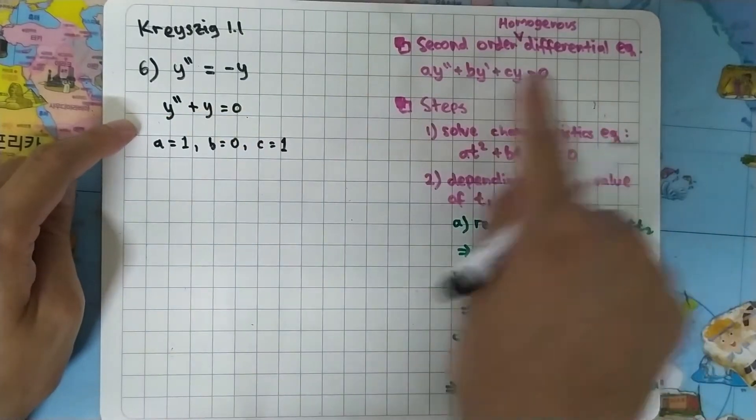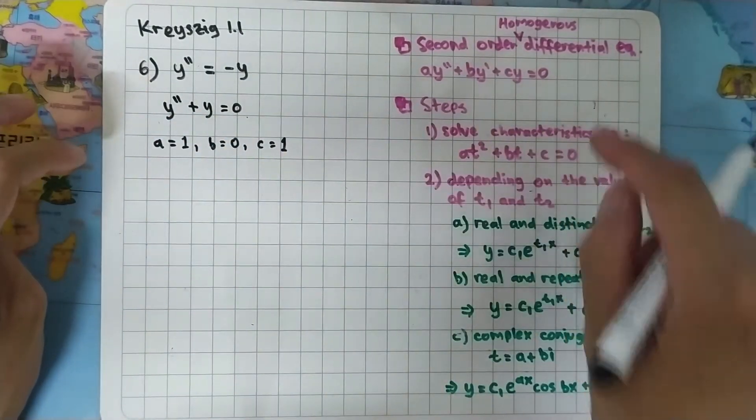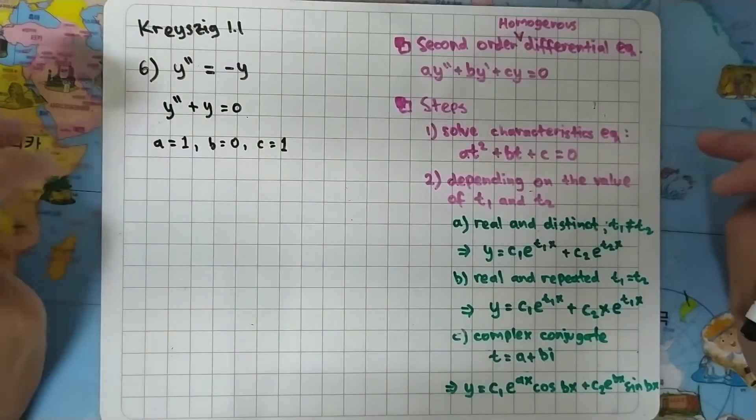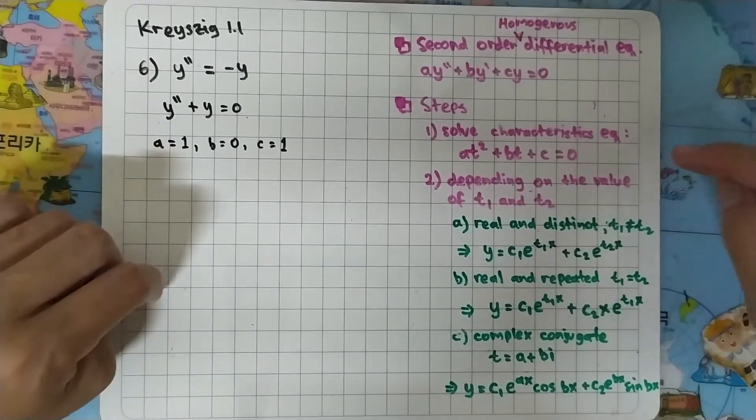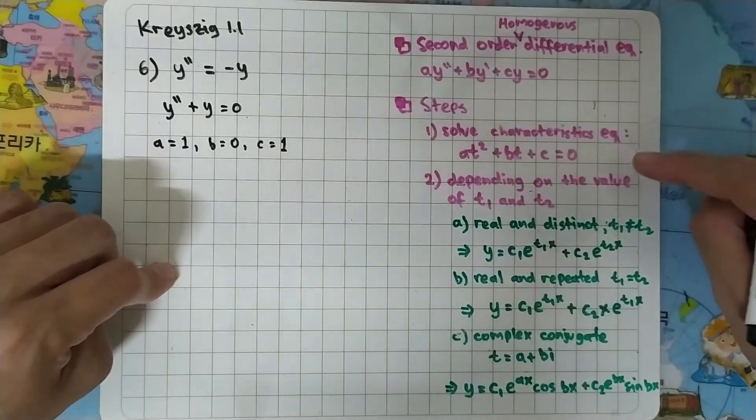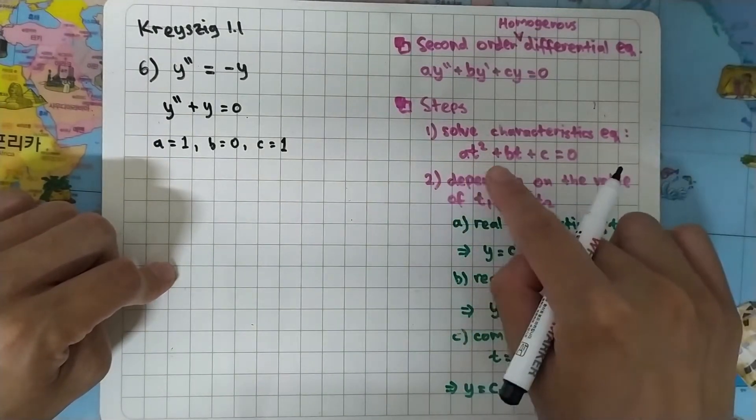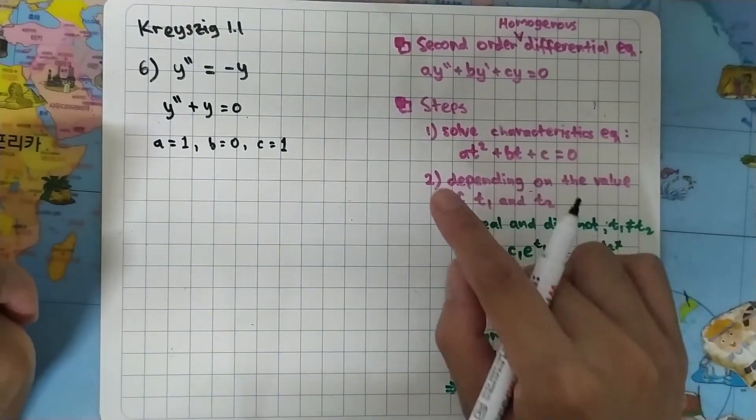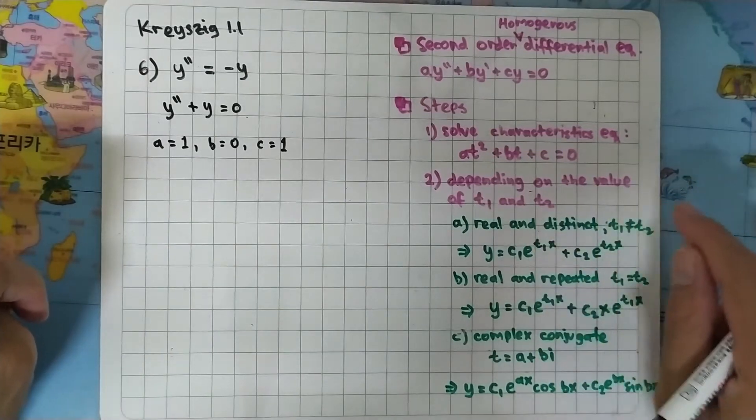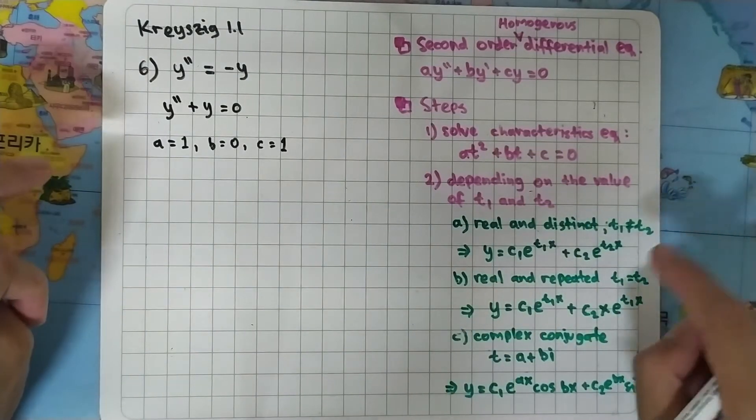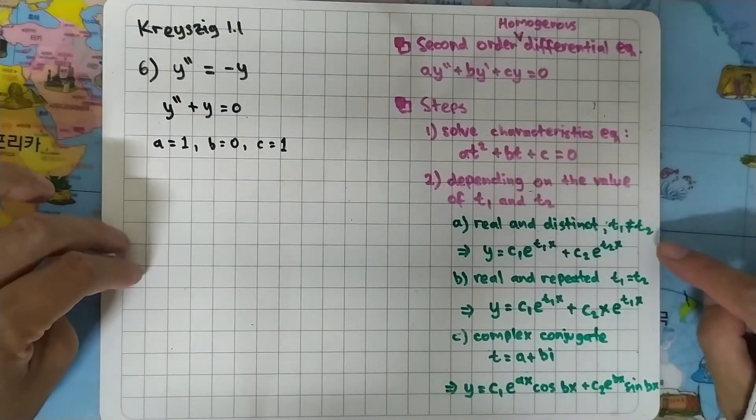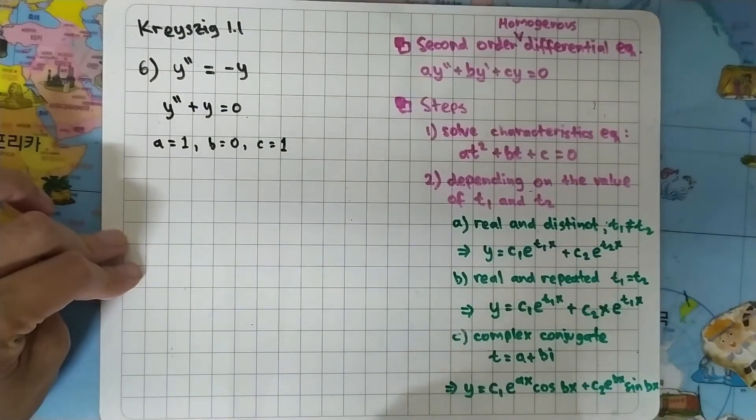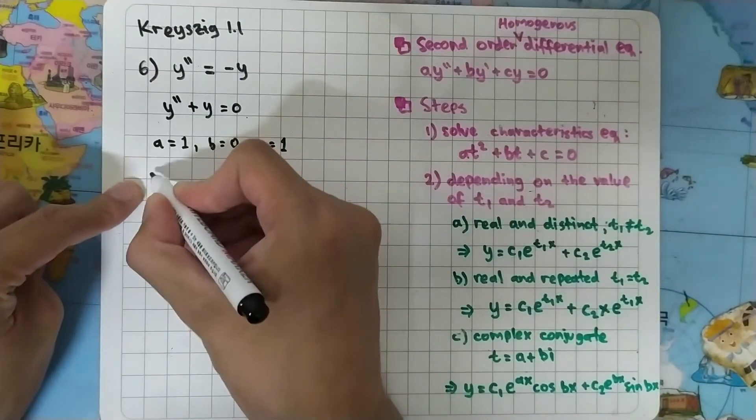This is actually one of the equations of this type. To solve this, we need some steps. The first one is solve the characteristic equation AT squared plus BT plus C, and we will have two roots T1 and T2. Depending on the value of T1 and T2, we will have three cases. Let's see what case we got here.